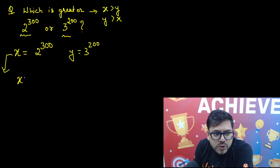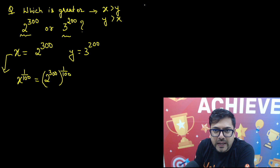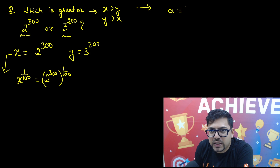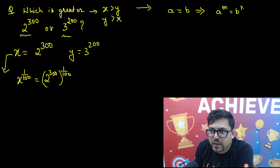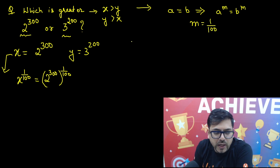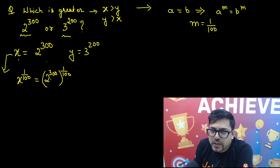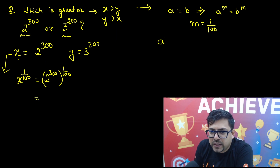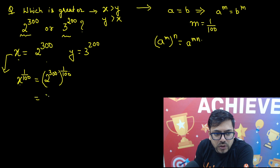So I have x raised to power 1 upon 100, and similarly 2 raised to power 300 also gets a power of 1 upon 100. The property I'm using here is: if a equals b, I can raise the same power to both sides — a raised to power m equals b raised to power m, where m can be anything. Here m is 1 upon 100. Also, we use the property that a raised to power m, whole raised to power n, gives a raised to power m into n — we just multiply both powers.